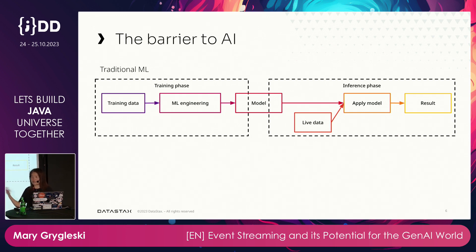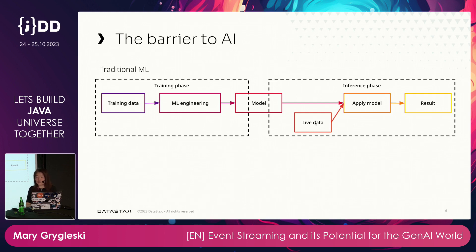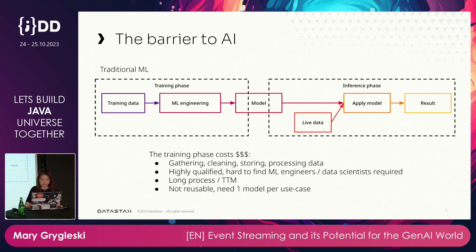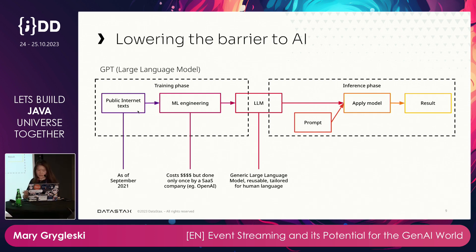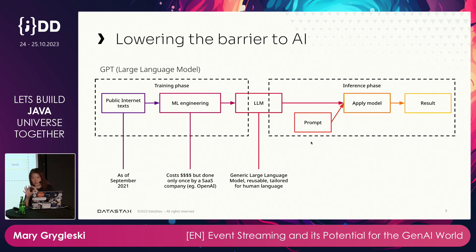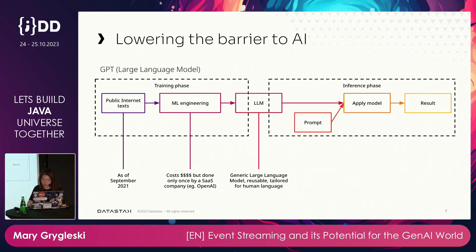The live data is what's missing in the current LLM model. We want to bring in live data using event streaming techniques and apply it to the model so you can generate updated results. This connects to the RAG technique — Retrieval Augmented Generation — where real-time data can be streamed into and used to drive the LLM prompts.